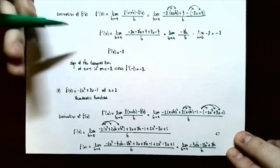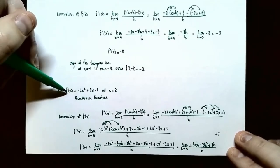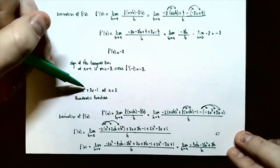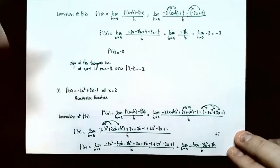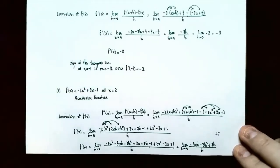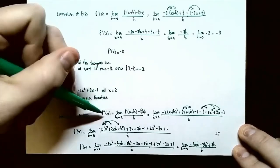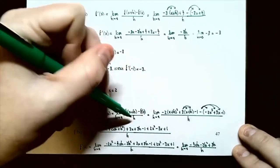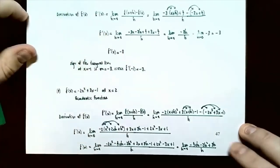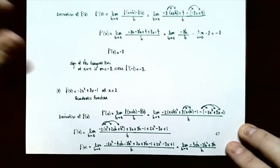Number 3: this time we have a quadratic function. F of x equals negative 2x squared plus 3x minus 1, and we want to find the slope of the tangent line at x equals 2. The steps are the same — we're repeating finding the derivative using the limit of the difference quotient. F prime of x is the limit as h goes to 0 of f of x plus h minus f of x all over h.